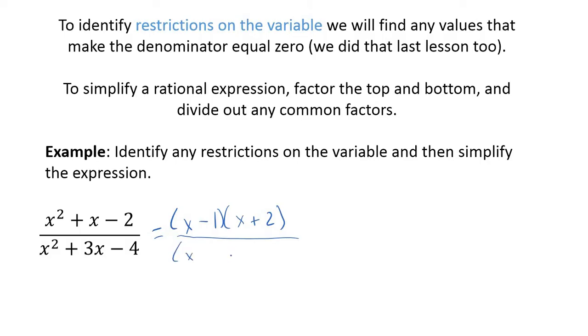Now on the bottom, we can do the same thing. So I need factors of negative 4 add to make 3. So for 4, I could have 2 and 2 or 1 and 4. Well, 2 and 2, there's no way we could get adding to make 3. And so they need to add to make positive 3. So plus 4, minus 1. So before I simplify, let's identify restrictions. And so x cannot equal 1 or negative 4, because either one of those values would make the denominator 0.